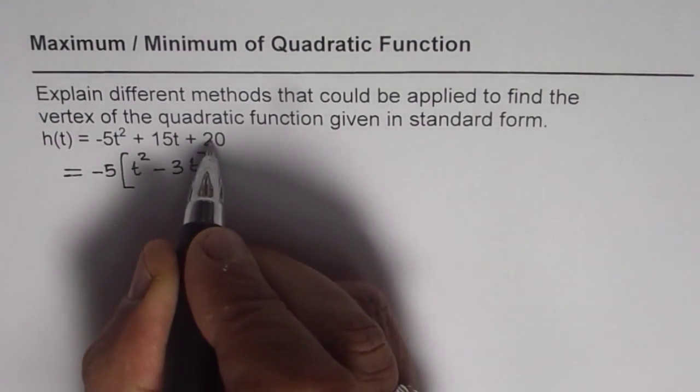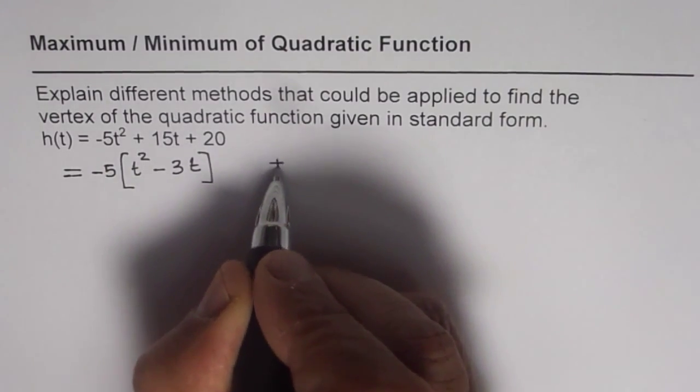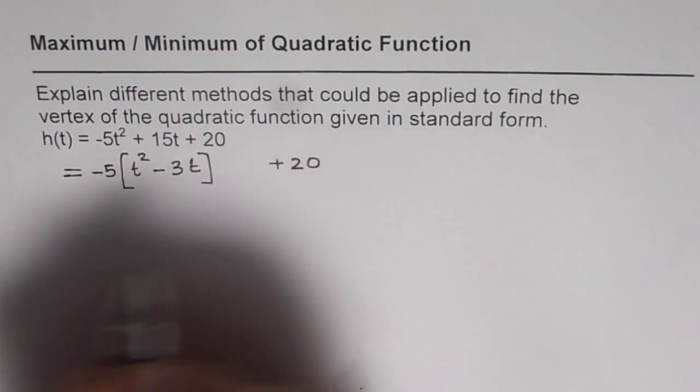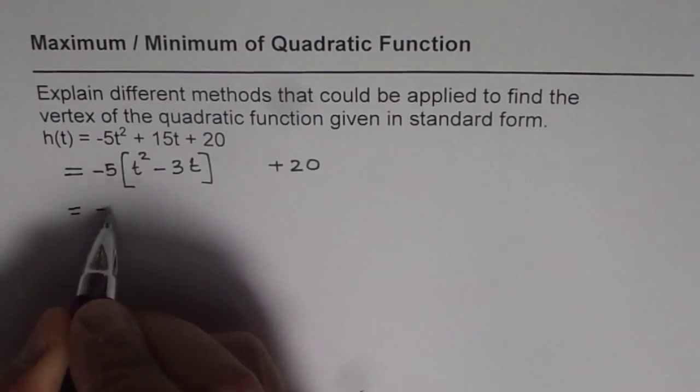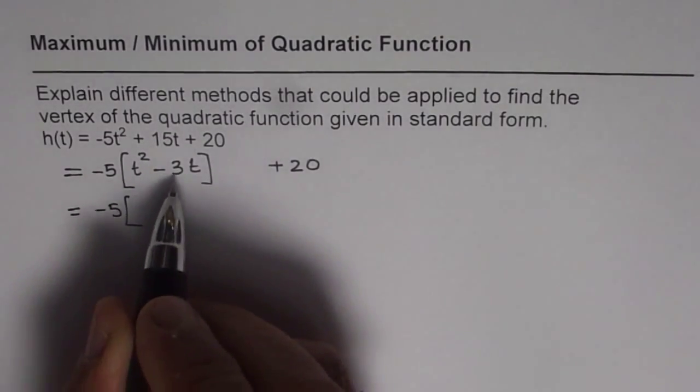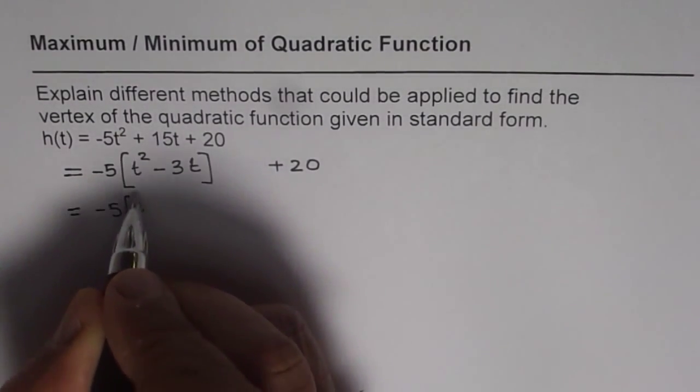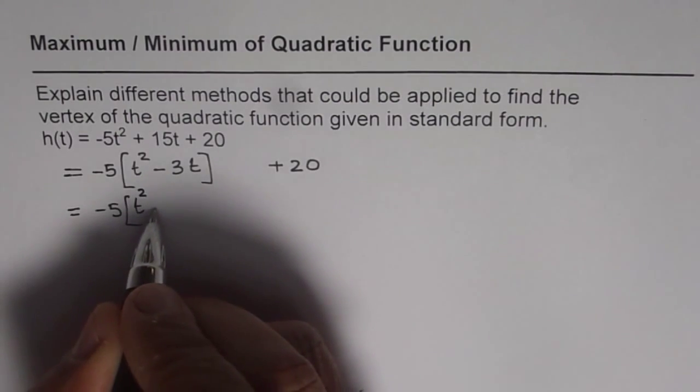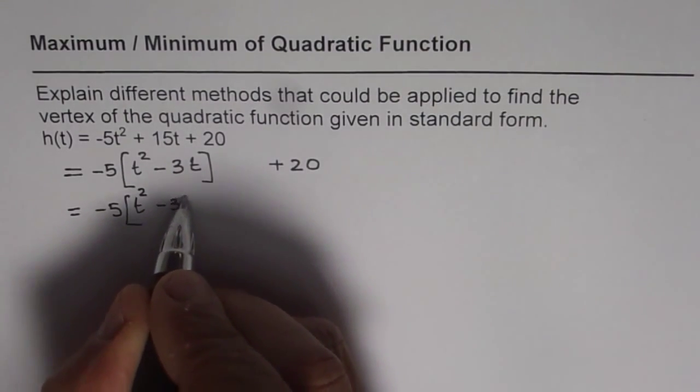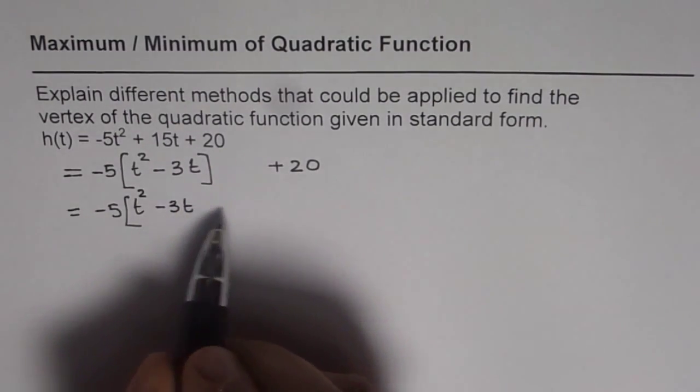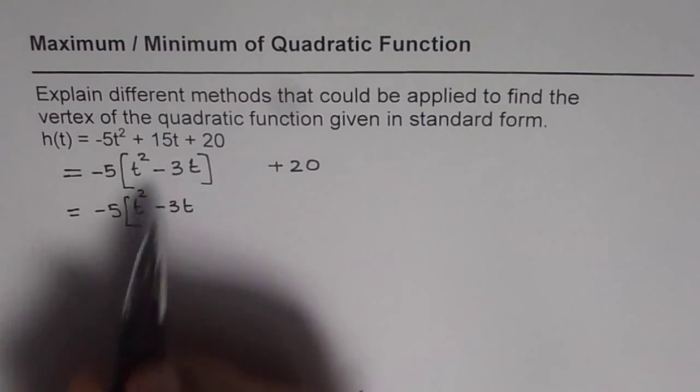And then we will write this constant of the equation kind of separate. Next step is we have to find half of this number. So we are trying to make it a perfect square. We can make it a perfect square if I add and subtract half of 3 in this case.